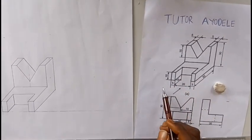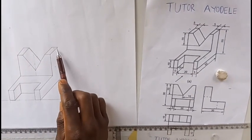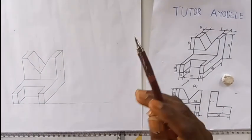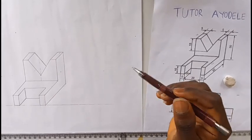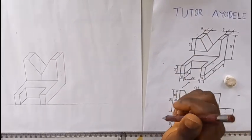You are only left to give it dimension. Remember when you dimension, your dimension should be at least one centimeter away from the drawing when you are dimensioning. Thank you. Make sure you subscribe and share to other people.